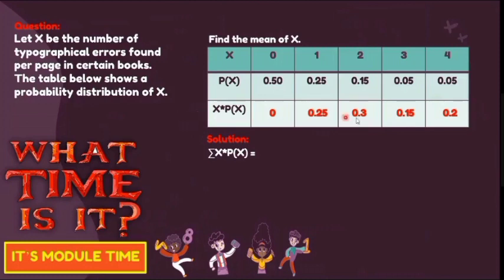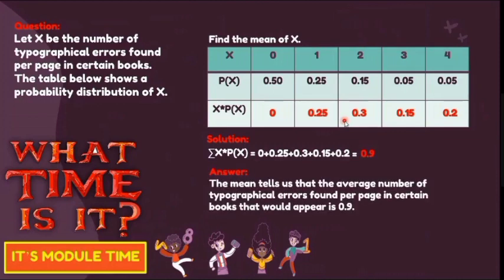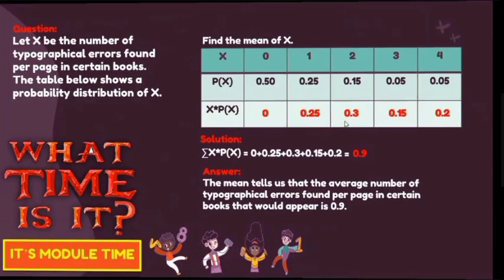Get the sum of the third row: 0 plus 0.25 plus 0.3 plus 0.15 plus 0.2 equals 0.9. For the last part, interpret the result: the mean tells us the average number of typographical errors found per page in a certain book is 0.9.